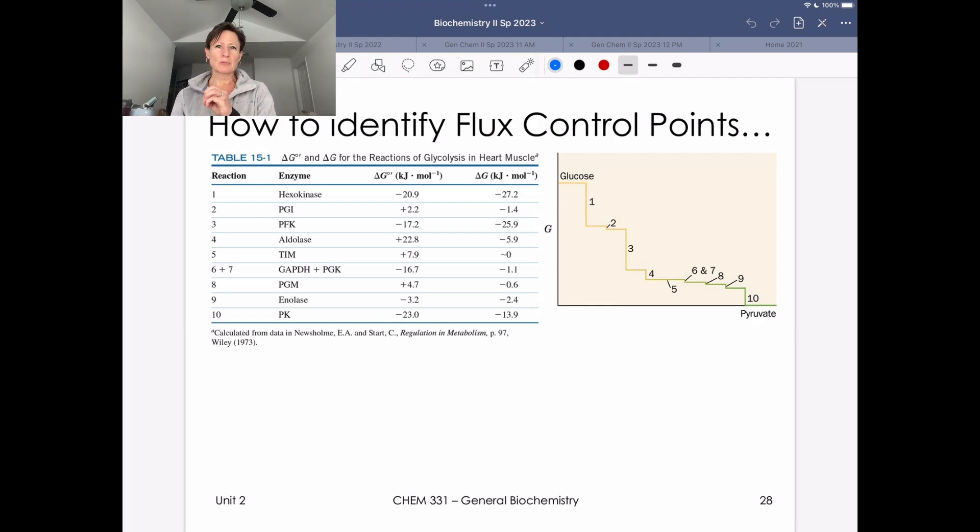So a control point represents an enzyme in a pathway where we're going to control flow, which is flux. So that's what a flux control point is. We're controlling the flow of metabolites through a metabolic pathway.